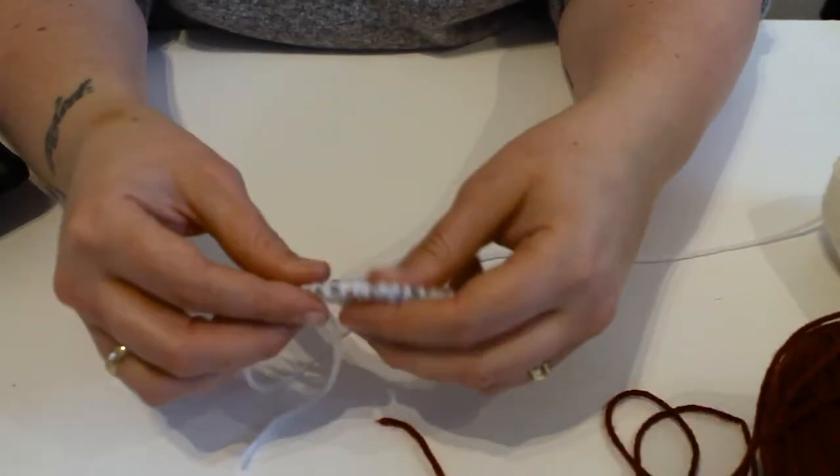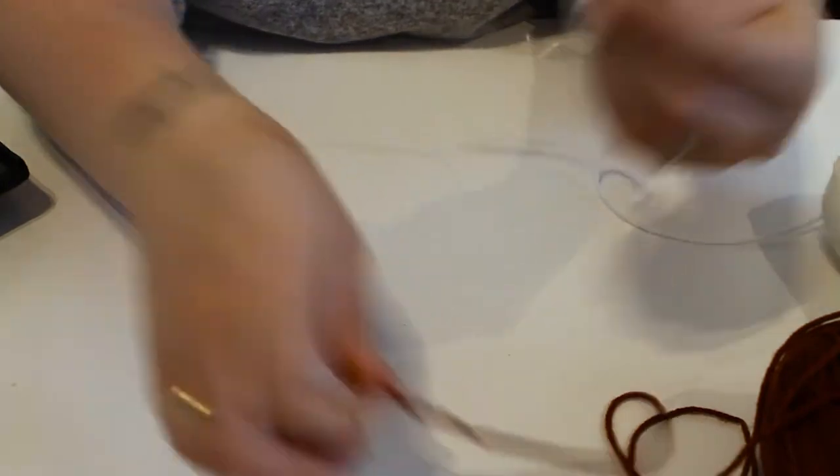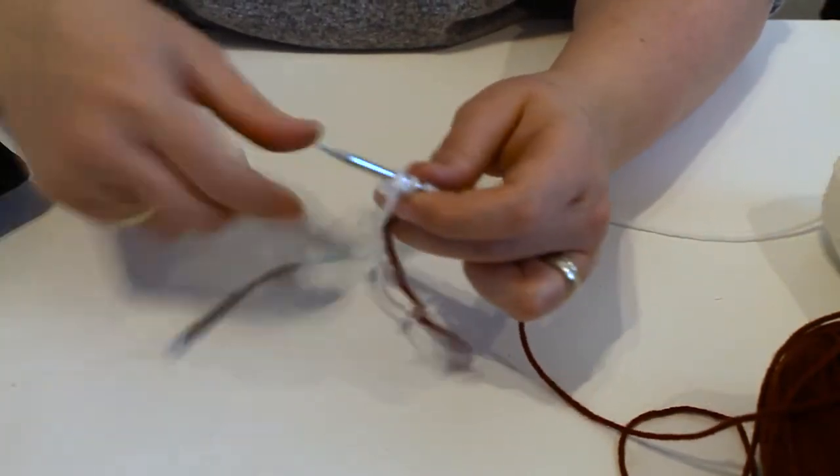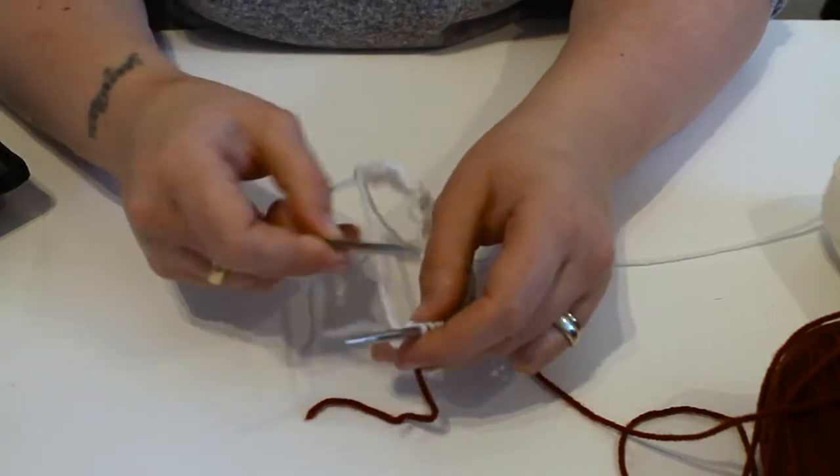Once you've done your rib stitch, you then want to add in the red. You can either tie it in or I just loosely knit it in and then tie it up later.